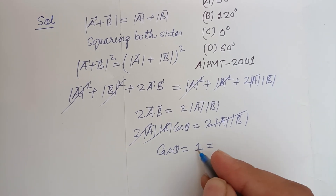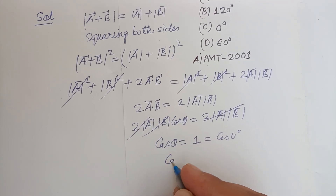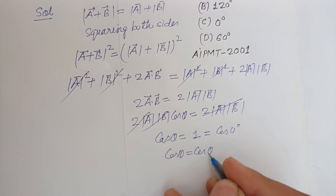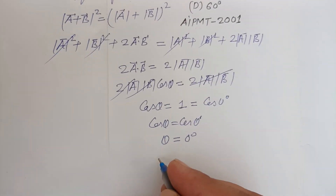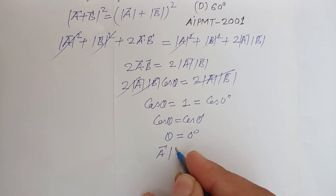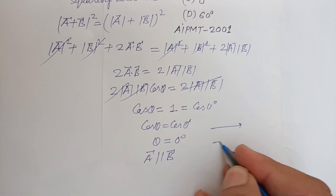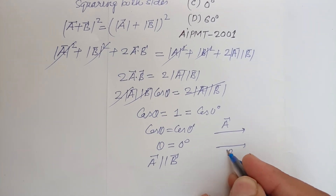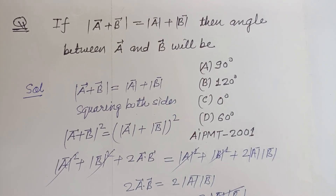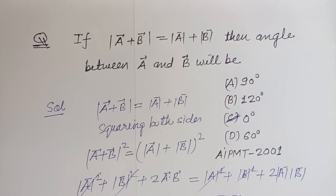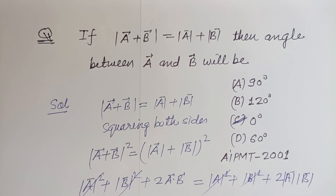So cos theta equals one, which means theta equals 0 degrees. This means vector a is parallel to vector b. So the angle between them is 0 degrees, which corresponds to option C. Option C is correct. I hope you got it — please like the video, subscribe to the channel, thanks for watching.